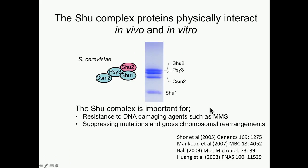The SHU complex in budding yeast consists of four proteins, which are differentially color-coded because although they are in the same complex, they exhibit some unique phenotypes. They are important for resistance to DNA damaging agents, particularly methyl methane sulfonate, for suppressing mutations and gross chromosomal rearrangements, the latter of which was shown by Richard Kolodner's group.